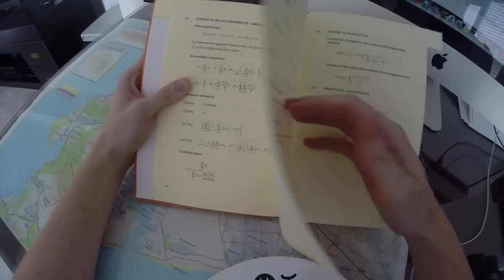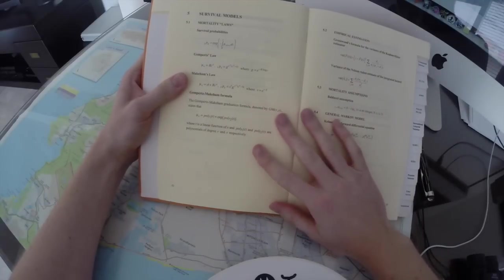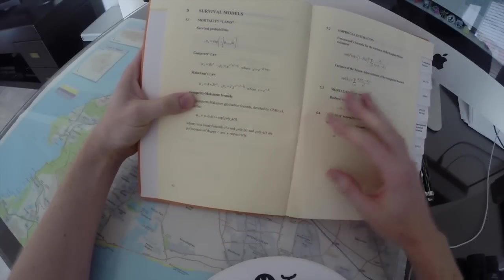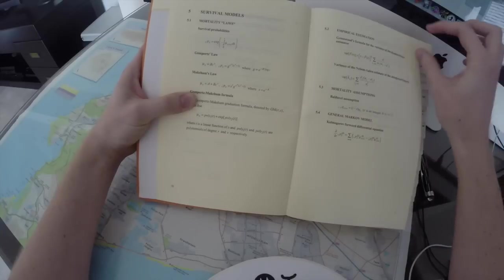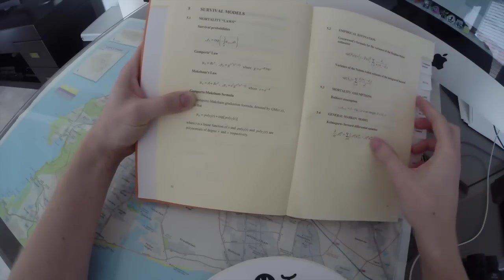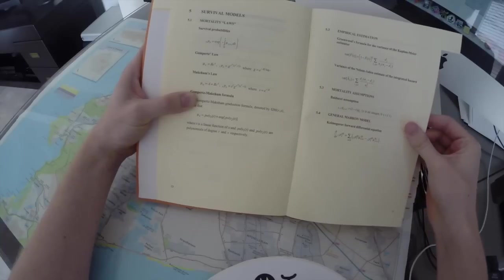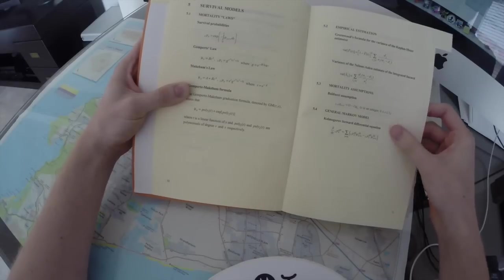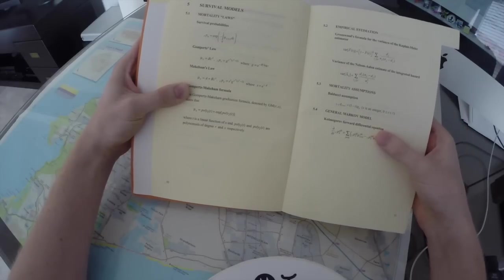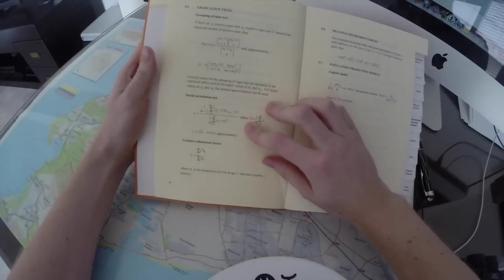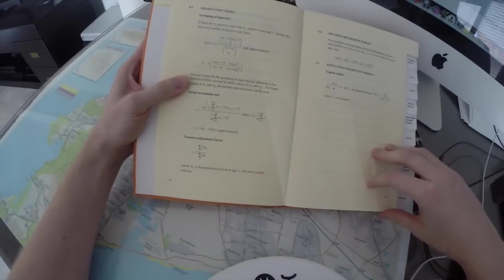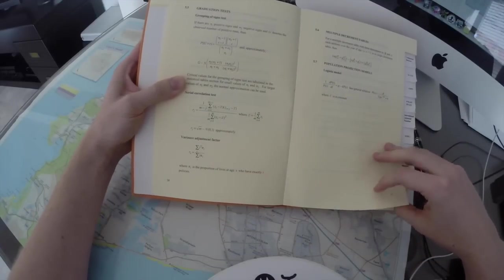Variable interest rates. Then we have survival models, Gompertz's law, Makeham's law, then their formula together, empirical estimation, Greenwood's formula for the variance of the Kaplan-Meier estimator, mortality assumptions such as Balducci, the general Markov model, Kolmogorov's four differential equations, those things aren't too much fun, graduation test, grouping of signs, serial correlations, variance adjustment factors, population projection models.